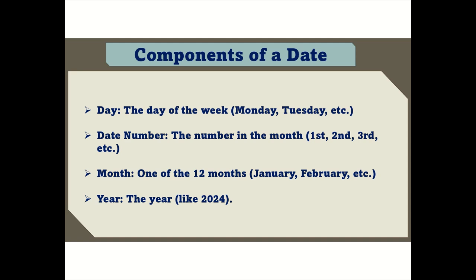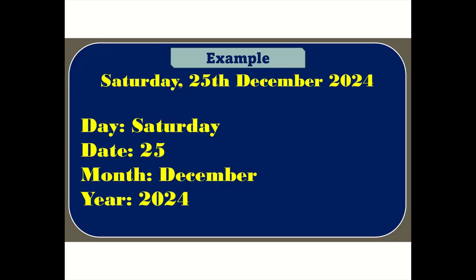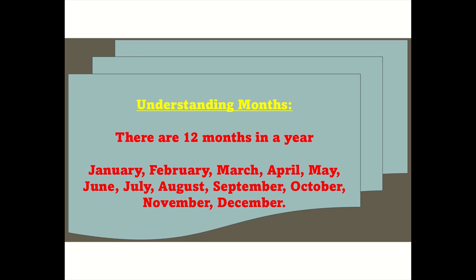Components of a date: Day — the day of the week, like Monday, Tuesday, etc. Date number — the number in the month, like first, second, third, etc. Month — one of the 12 months, like January, February, etc. Year — the year, like 2024. Example: Saturday the 25th of December 2024 — day: Saturday, date: 25, month: December, year: 2024.